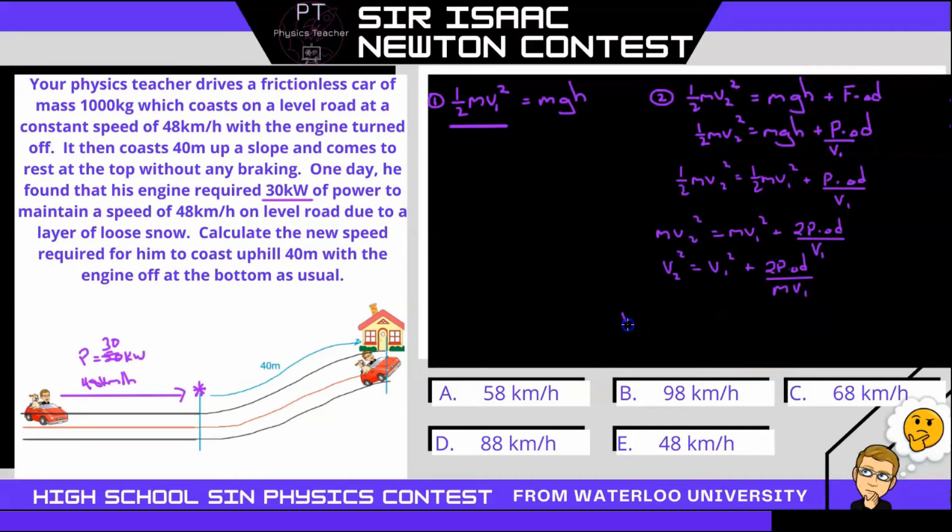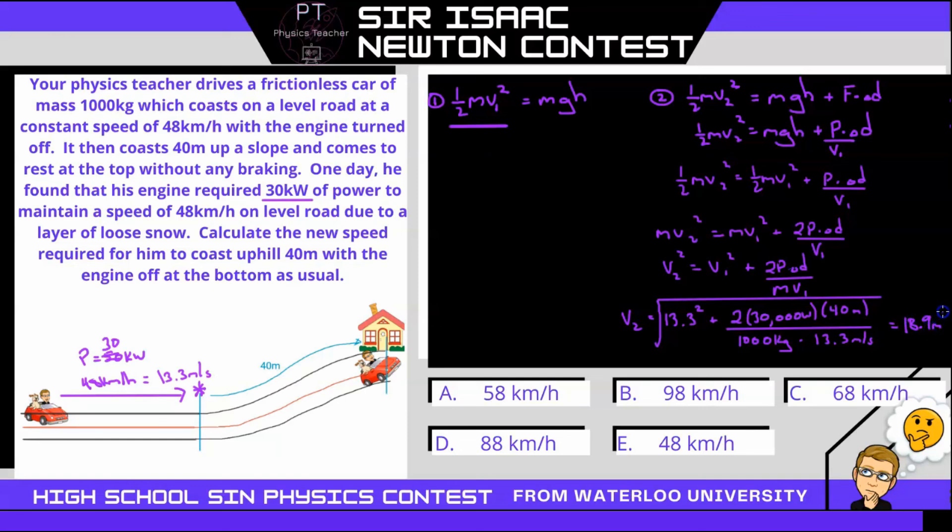Now we can start subbing in some numbers. v2 is going to be the square root of v1 squared, which is 48, but if we change that into meters per second we get 13.3 meters per second. So we have 13.3 squared plus 2 times the power is 30 kilowatts, which is 30,000 watts, changing everything into SI units, times our displacement which is 40 meters, all divided by the mass which is 1000 kilograms times that initial velocity in meters per second, 13.3 meters per second, which gives us a final velocity of 18.9 meters per second, or multiply by 3.6 to get 68 kilometers an hour. Our answer is C.